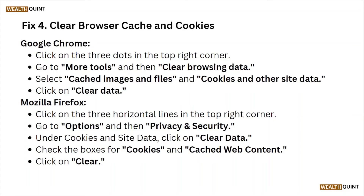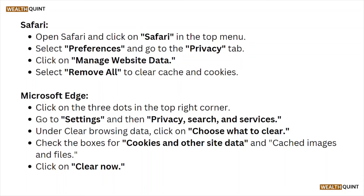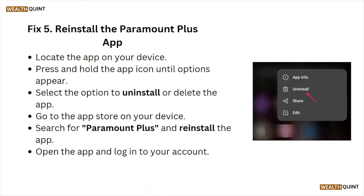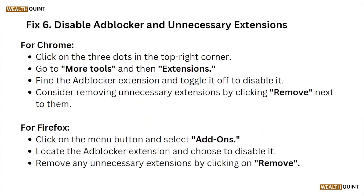Fix number five is to reinstall the Paramount Plus app. Locate the app on your device, press and hold the app icon until the options appear, then select the option to uninstall or delete the app. Go to the app store on your device, search for Paramount Plus, reinstall the application, then open it and log into your account.